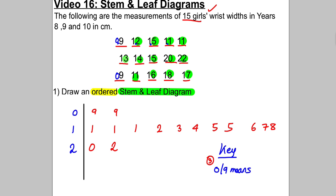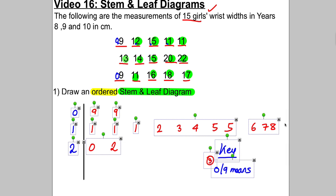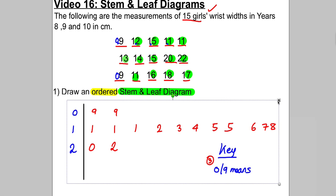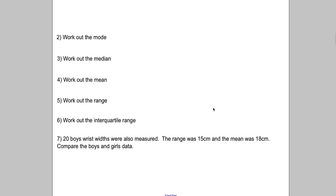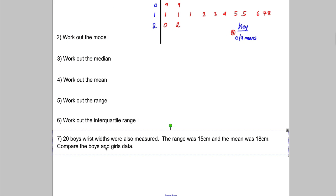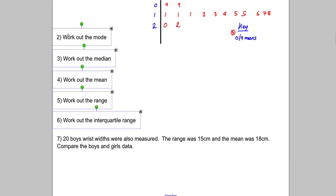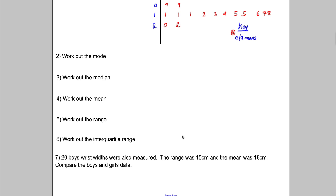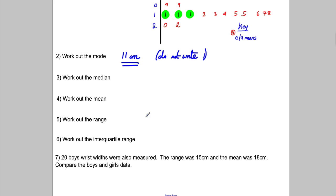So I'm going to copy this diagram into the next page. These are the things we could be asked from this: the mode, the median, the mean, the range, and the interquartile range. The mode is the one that comes up the most often. The one that came up the most often here was 11 — and make sure you don't write the mode as just 'one'. The mode is one-stroke-one, which is 11. Write the unit: 11 centimetres. A lot of students make that mistake.